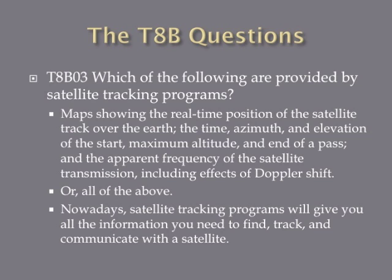Which of the following are provided by satellite tracking programs? The answer is all of the above. They provide maps showing the real-time position of the satellite track over the Earth; the time, azimuth, and elevation of the start, maximum altitude, and end of the pass; and the apparent frequency of the satellite transmission, including effects of Doppler shift. Nowadays you can get almost any satellite tracking program free off the internet, and it will give you all of that information.